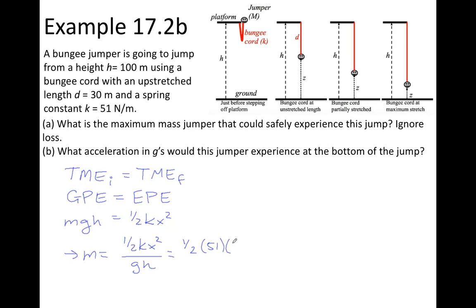And in that case, the bungee cord will have stretched 70 meters. It falls till it reaches 30 meters, and then it can stretch another 70 before the jumper hits the ground. G has a value of 10, and the initial height was given as 100. This works out to be a mass of 125 kilograms, which is about 275 pounds.